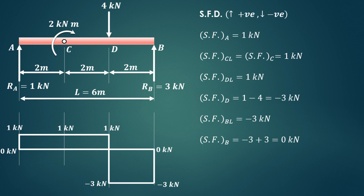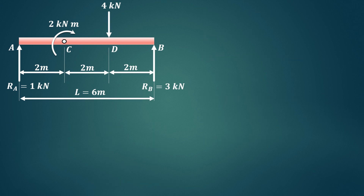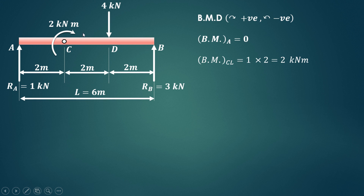The next step is to draw the bending moment diagram. The conventions are clockwise positive and anticlockwise negative. Bending moment at A is 0. Just left of C, reaction Ra acting upward produces a clockwise moment of 1 x 2 equals 2 kNm. Exactly at C, the external clockwise moment of 2 kNm is added, giving a total of 4 kNm at C.